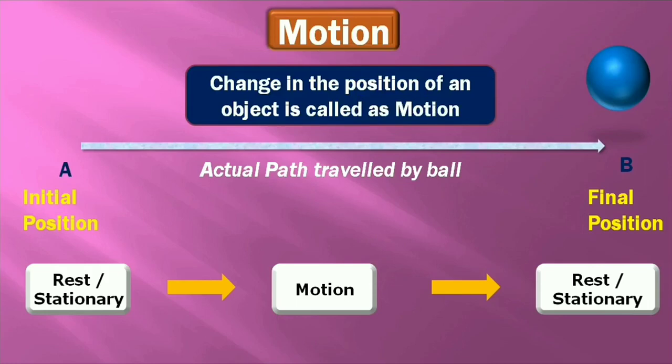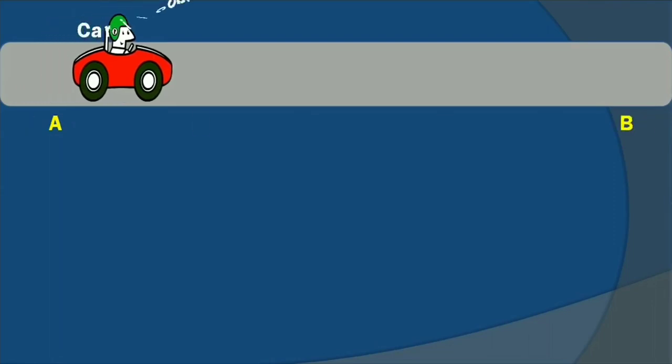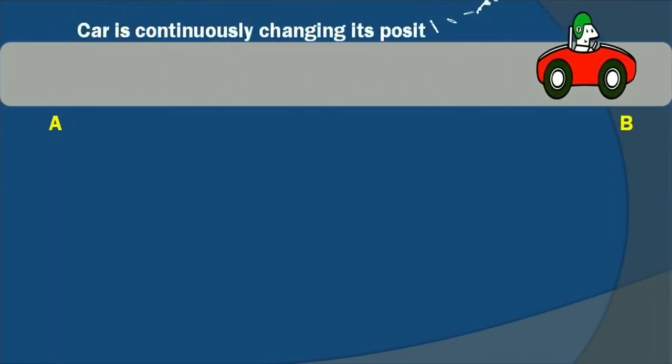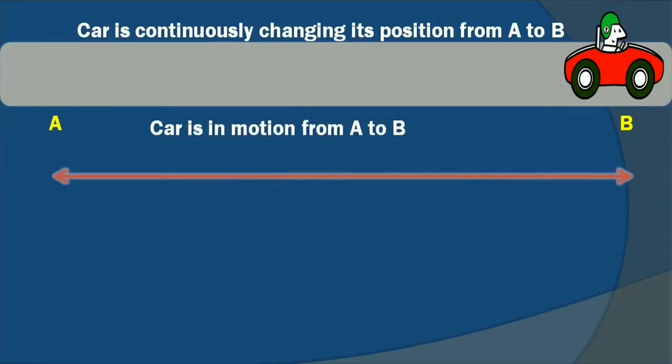Now let's take another example to describe motion. As you can observe on the screen, one car is there. This is the initial position of the car — let's call it A. From A the car is moving to position B, continuously changing its position from A to B. Let's take some numerical values: the distance between A and B is 20 meters. Now if we introduce another point C, point B is at 10 meters distance from point C.